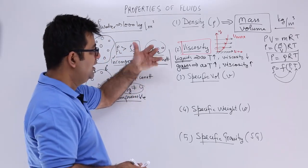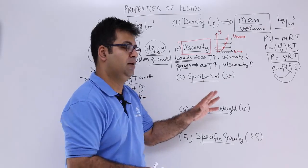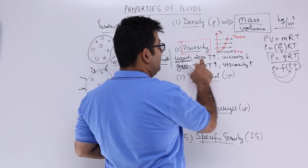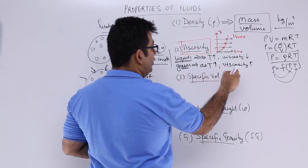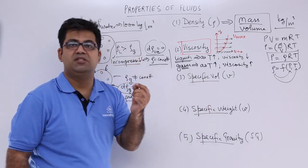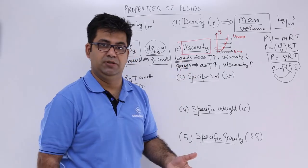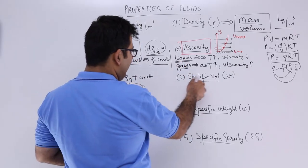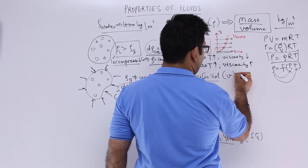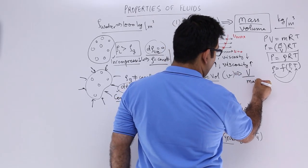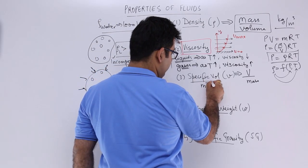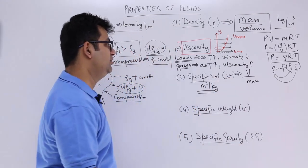We will discuss more about viscosity in a further video, wherein an entire chapter is dedicated to viscosity. Why do these things happen — why does increasing temperature decrease viscosity in a liquid but increase it in a gas? It depends upon the frequency of molecular interaction in gases and in liquids. Now let us talk about specific volume. Specific volume is the mathematical ratio of total volume upon mass, so the units will be meter cube per kg.